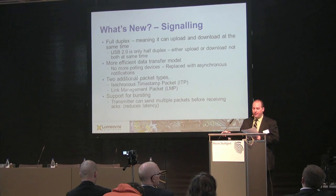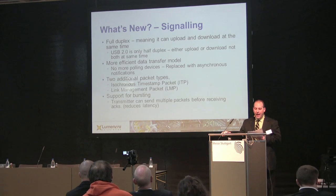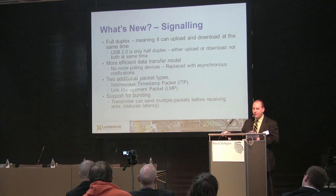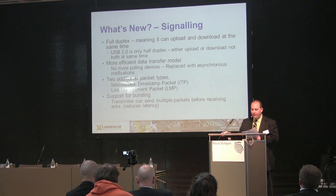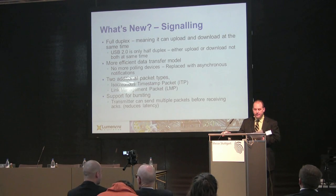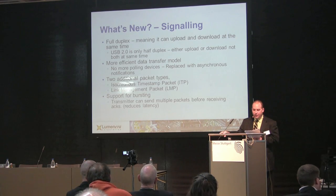The next change with USB 3 is in signaling. With five gigabits per second data rates, the signaling across the USB bus needed to change, but the specification designers went further and also changed the way data traffic flows within the bus. USB 3 is a fully duplex bus, meaning data can travel in both directions at the same time. This is more efficient from both a data rate and power perspective, as USB devices do not need to wait to send and receive data. They also improved the data transfer model by eliminating the need to poll devices to get data.